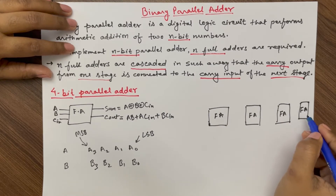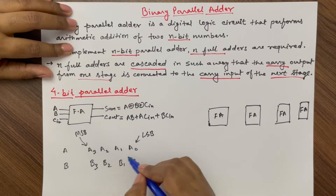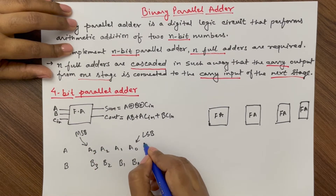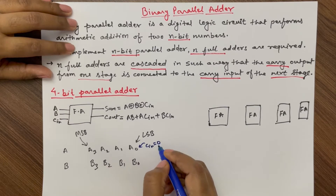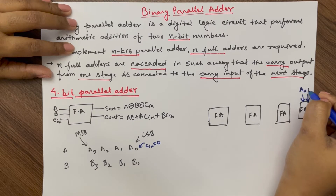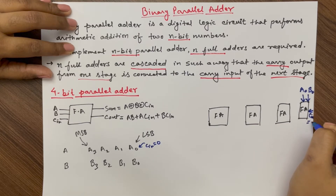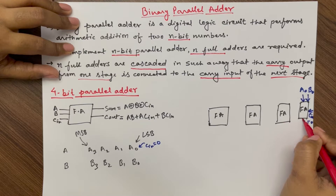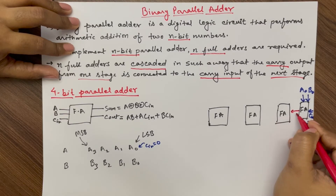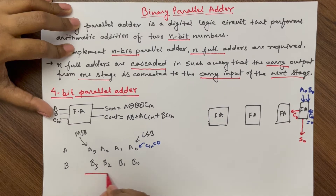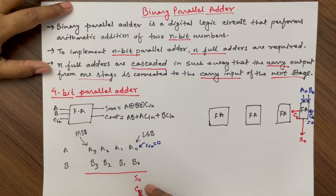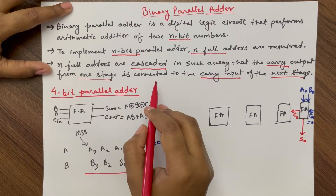For the first full adder, the inputs are the LSBs of the first and second numbers, that is A0 and B0, and the third input will be C-in, which in this case is zero. So inputs are A0, B0, and C-in = 0. The output will be sum S0 and carry output C0.